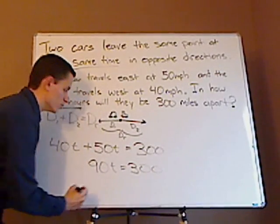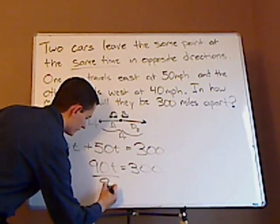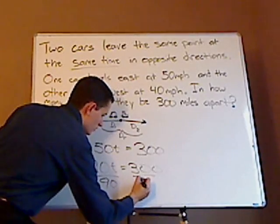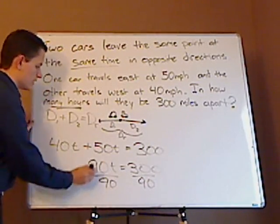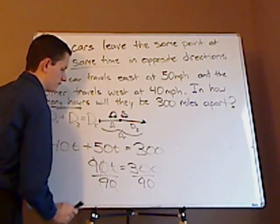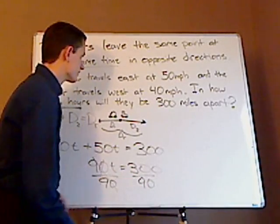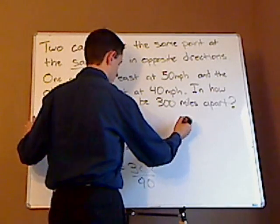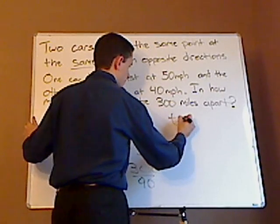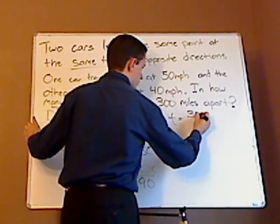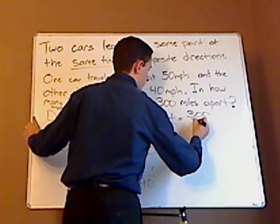Now you're going to divide both sides by 90. All right, when you do that, this cancels, and this is going to cancel too. It's going to simplify. You have time equals 300 over 90.